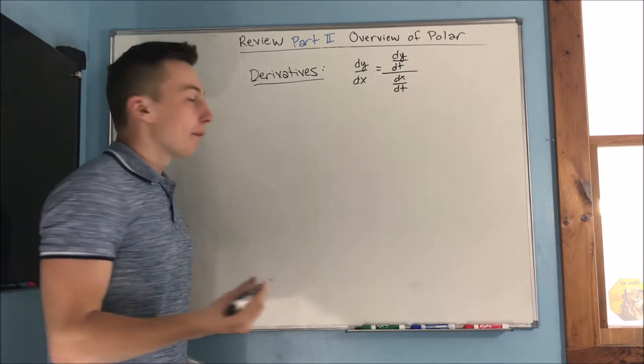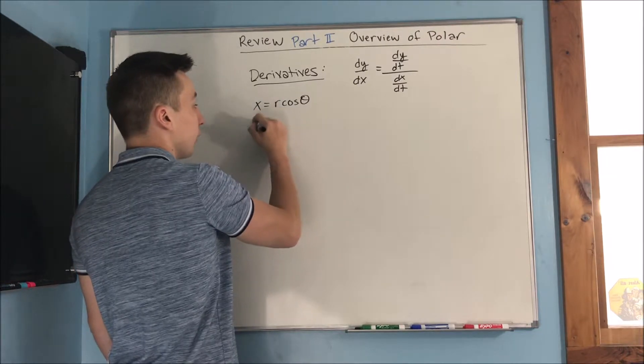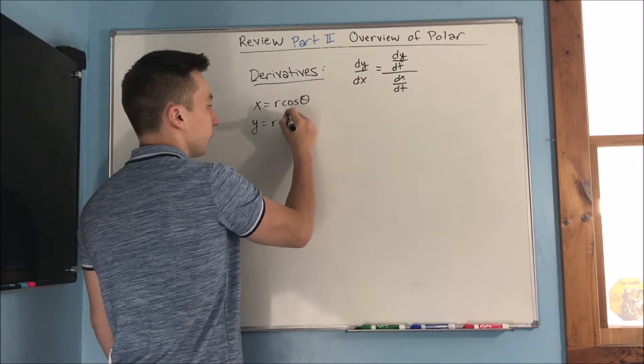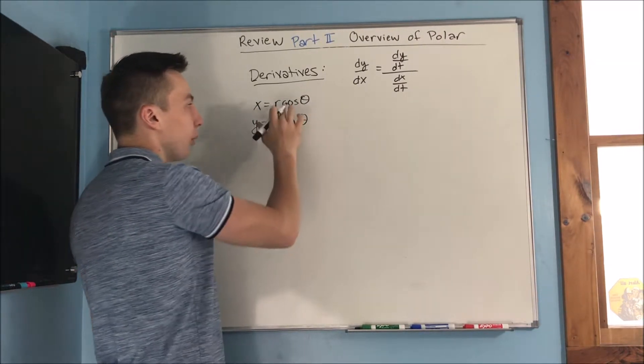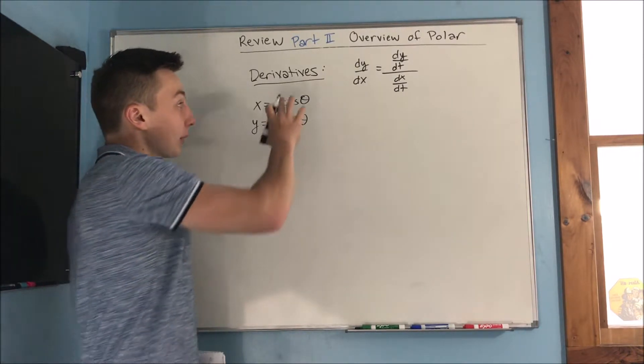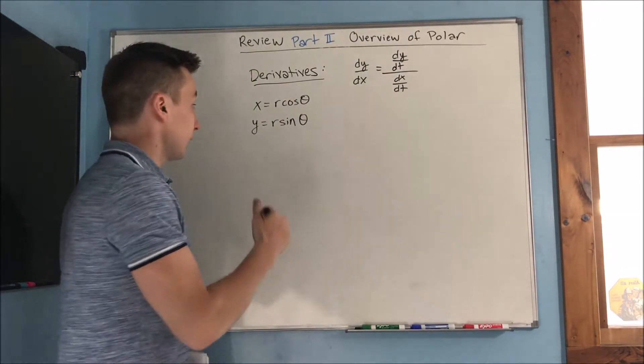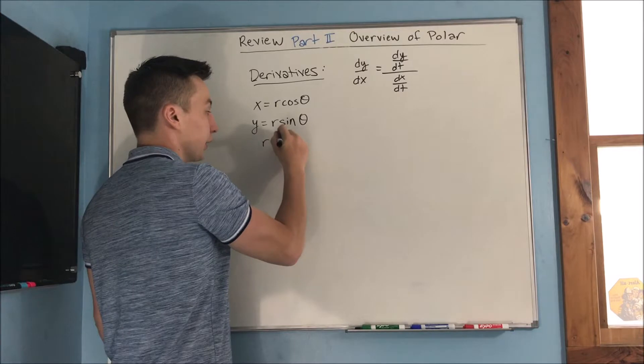And we also know that x equals R cosine theta and y equals R sine theta. These are what we know about polar, and these kind of start to look like parametric equations. So, we might be able to connect this with this. And what helps us connect is that we know R is a function of theta.